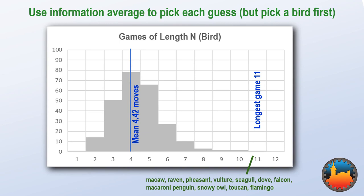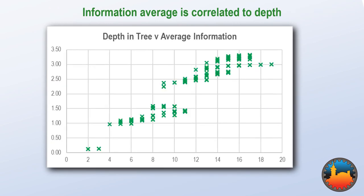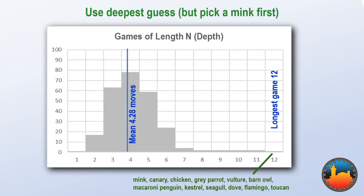Calculating the average information returned for each guess on every reachable tree is hard, but as this plot shows, it has a strong correlation with the depth the species node is down the tree. If we use this depth metric for the initial guess, the average game is 4.48. However, using an initial guess of mink followed by guesses based on depth, the average game is only very slightly more than it was for the fully calculated tree. This time-saving seems to justify the shortcut.